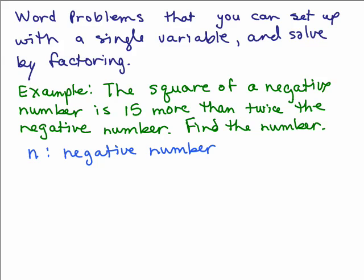So it says the square of a negative number is 15 more than twice the negative number. The square of a negative number. Well, if this is the negative number, n squared would be the square of it. So we're taking and breaking this up, the square of a negative number, that's sort of the left side of the equation, because we have is, meaning usually equals.